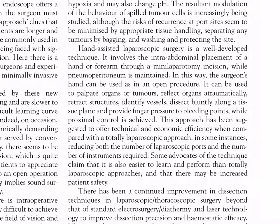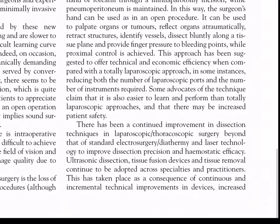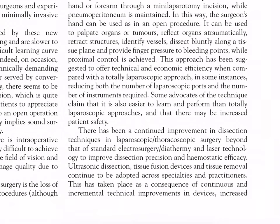Hand-assisted laparoscopic surgery is a well-developed technique involving the intra-abdominal placement of a hand or forearm through a mini-laparotomy incision while pneumoperitoneum is maintained. The surgeon's hand can be used as in an open procedure to palpate organs or tumors, reflect organs atraumatically, retract structures, identify vessels, dissect bluntly along a tissue plane, and provide finger pressure to bleeding points while proximal control is achieved. This approach has been suggested to offer technical and economic efficiency compared with a totally laparoscopic procedure, reducing both the number of laparoscopic ports and instruments required. Some advocates claim it is also easier to learn and perform, and may offer increased patient safety.